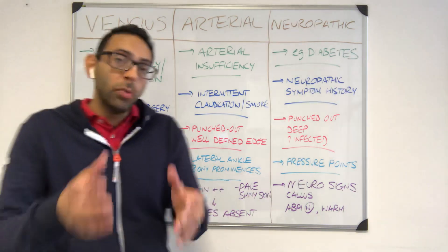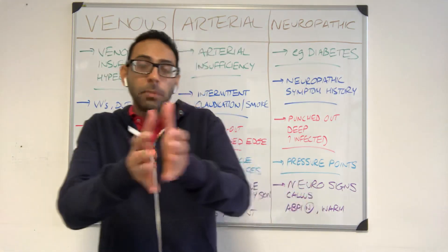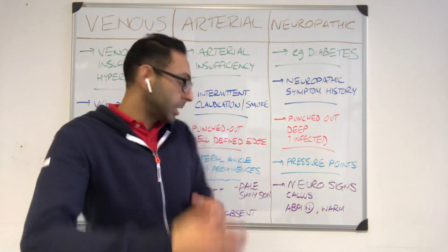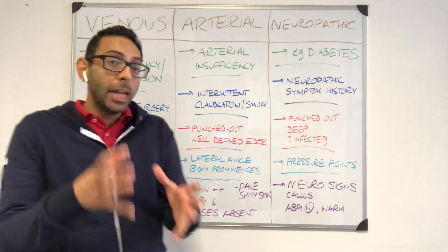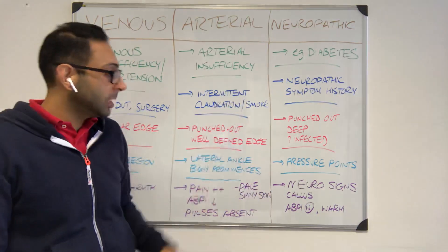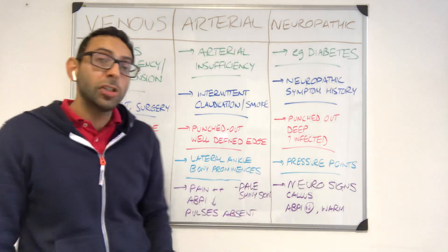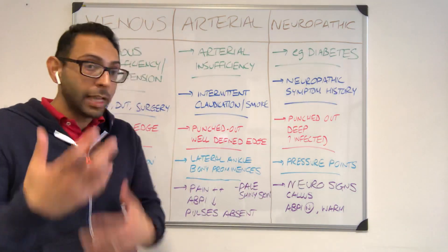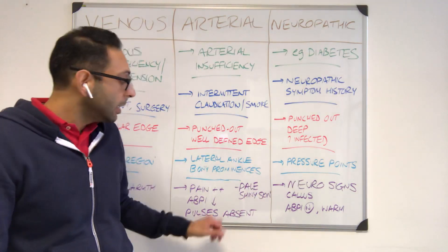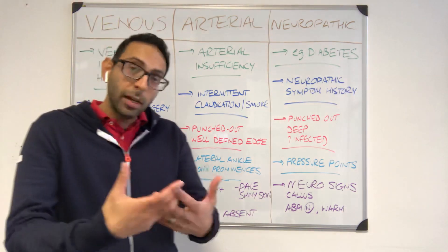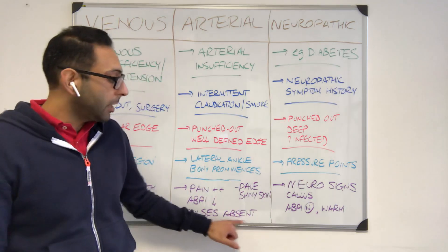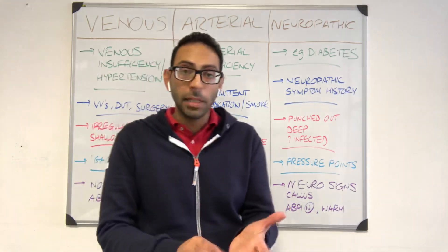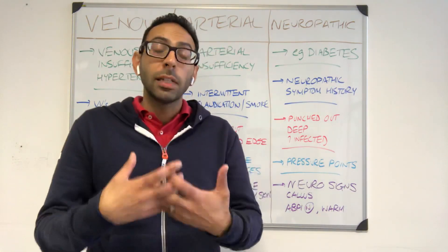In terms of where you get arterial ulcers, normally on the lateral side of the ankle as opposed to the medial side of the leg, and they can occur over bony prominences down the foot as well. They are usually very, very painful, which fits with the arterial insufficiency type of nature. The skin can change — it's quite pale, can be quite shiny, and you can lose hair on the surface. ABPI is quite low because of the poor arterial system, and you may find it difficult to palpate distal pulses — your DP or your PT, the posterior tibial.